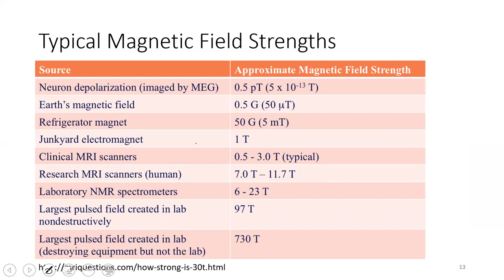Just to point out some typical magnetic field strengths—I borrowed this from a different website. Earth's magnetic field is about half a gauss. Gausses are not SI units, but they're just a multiple of 10 off from teslas, which is the SI unit. So half a gauss is 50 microteslas. Earth's magnetic field is pretty weak. A refrigerator magnet is 100 times as strong, so it's 50 gauss or 5 milliteslas for a refrigerator magnet.